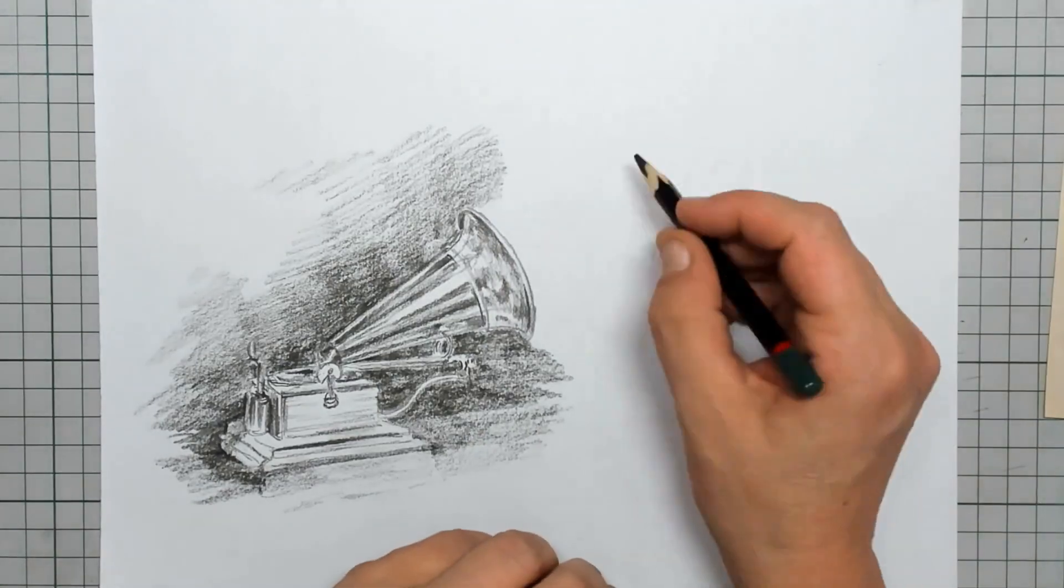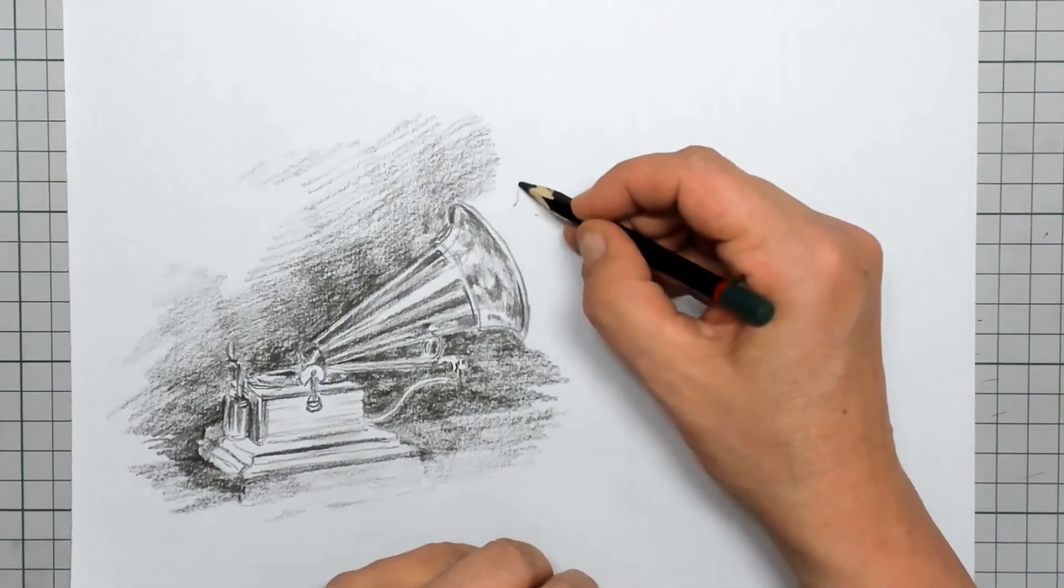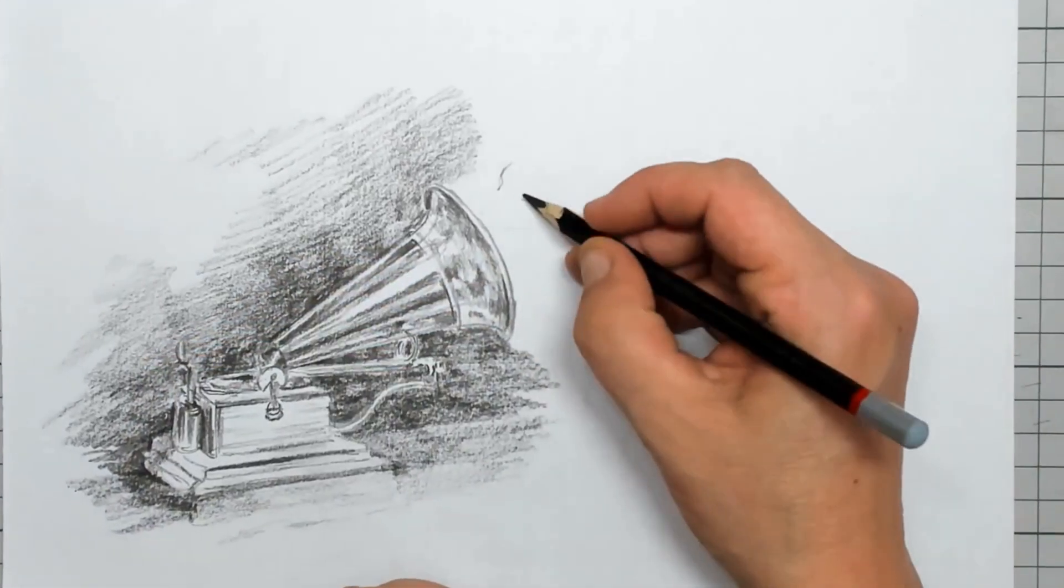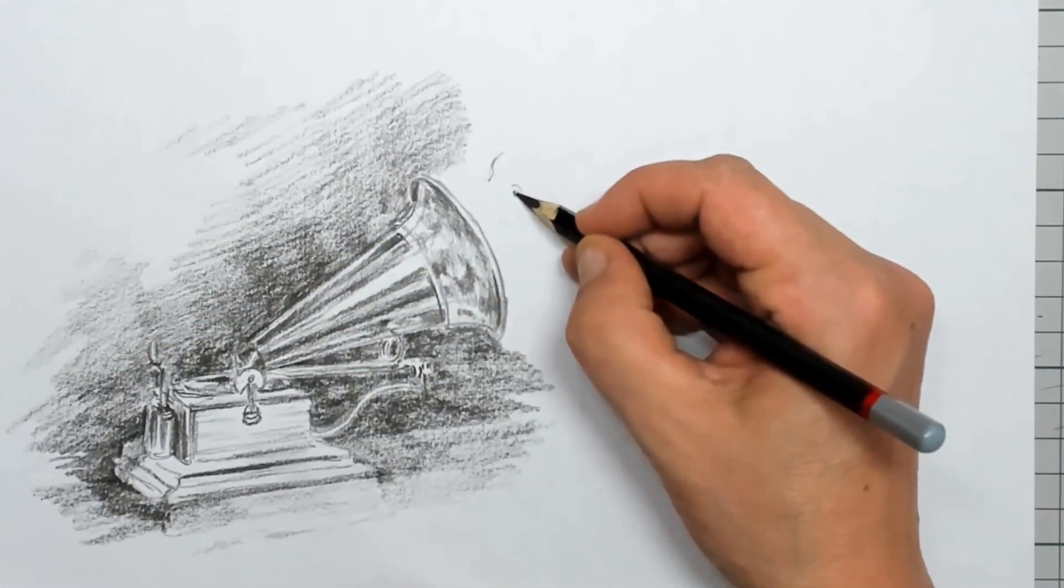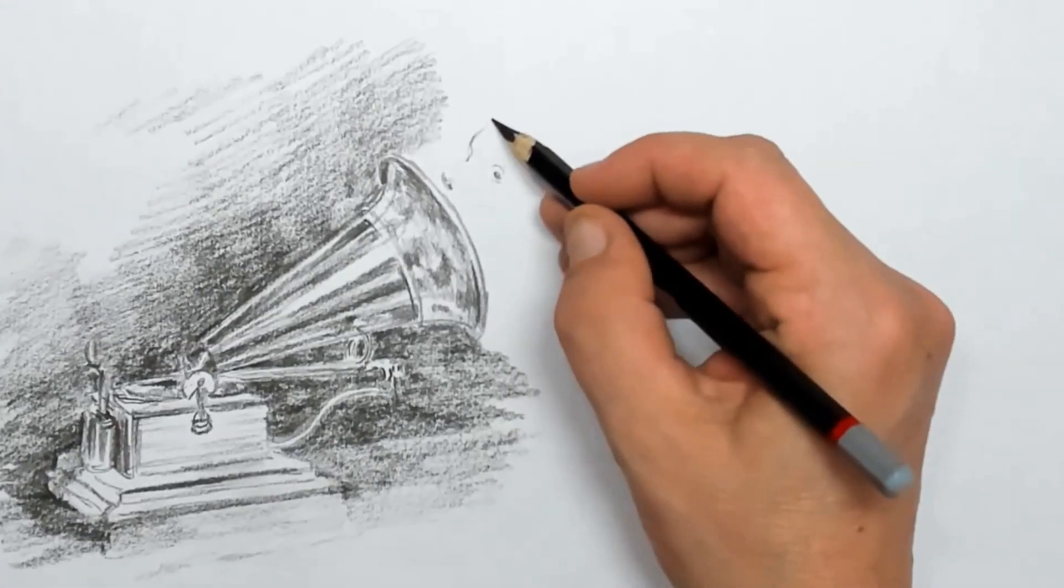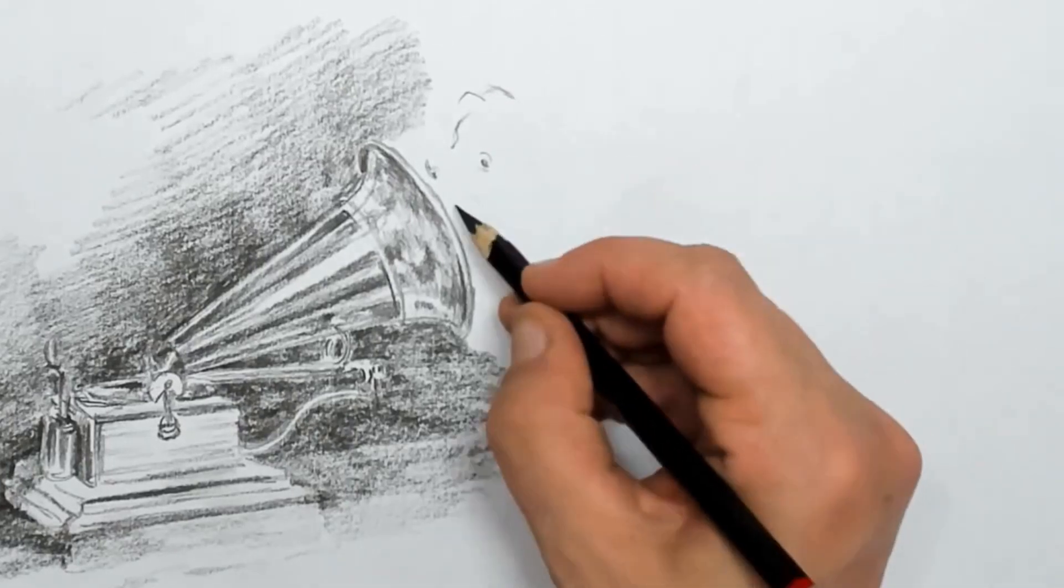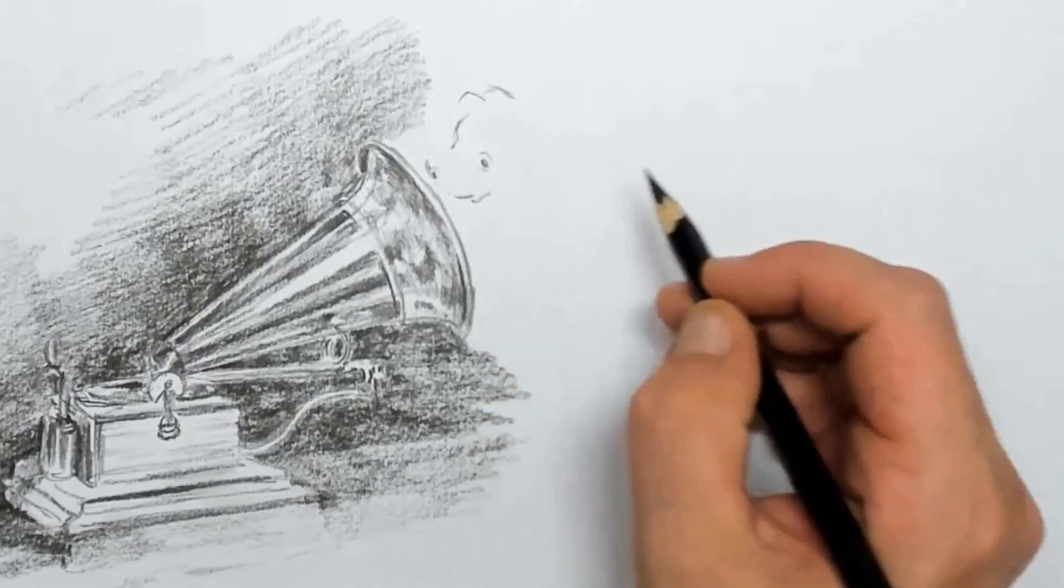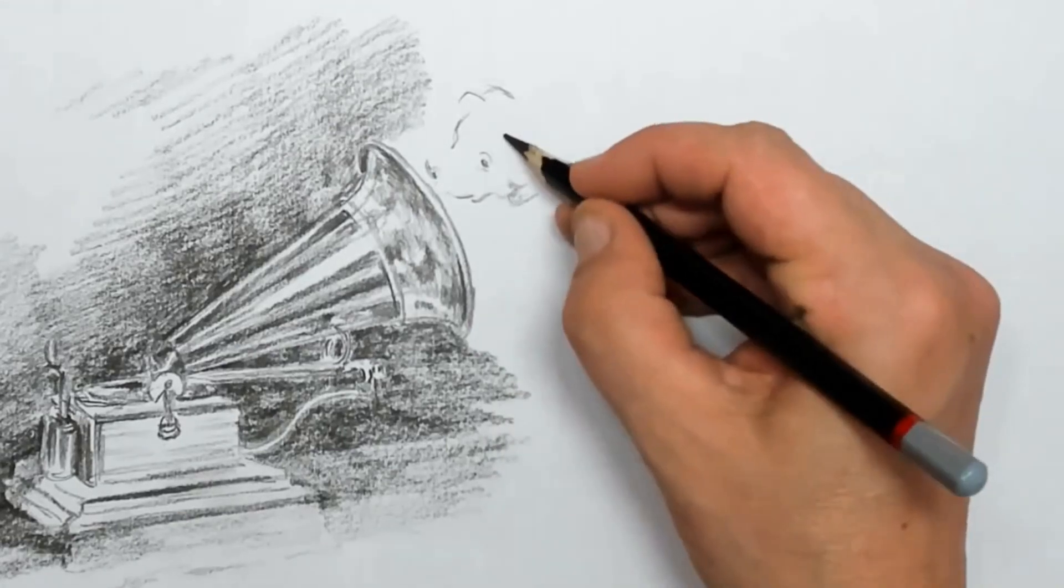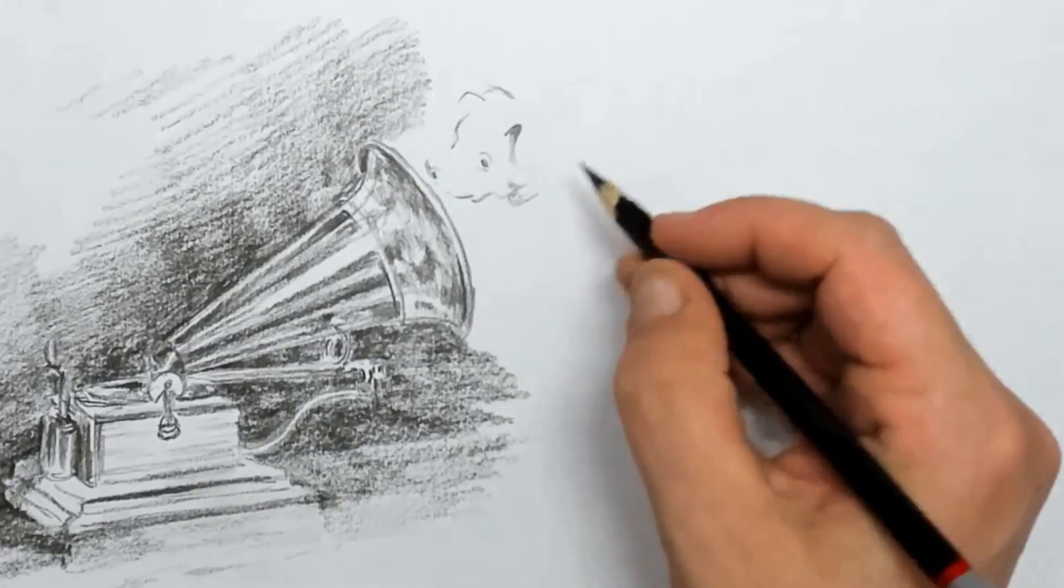The surface that the gramophone is on and Nipper is on is slightly reflecting. This is that part I was talking about, about a tilted head. This is quite difficult, so I do advise you to make a few pre-studies before doing the whole drawing.